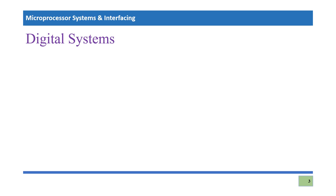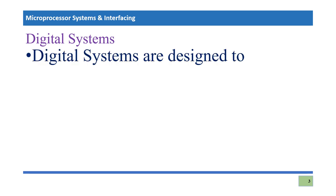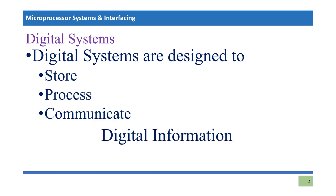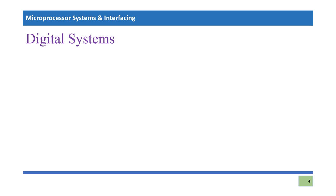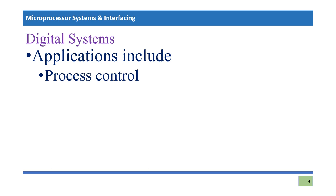The very first topic we are going to cover is digital systems. What is a digital system and how is it important for this course? Digital systems are those systems which are designed to store, process, or communicate digital information. Whenever you see any system using any of these properties, you call it a digital system. Digital systems are the base for this course, and we will find many examples of them around us.